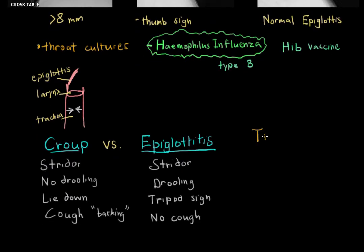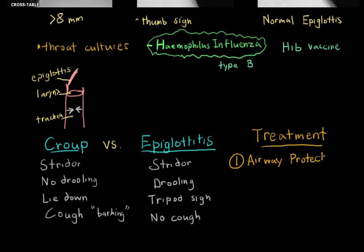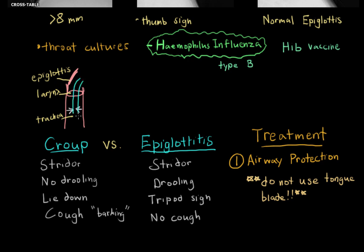Now let's finish off with the treatment of epiglottitis. First and foremost, you want to protect the airway — this is the number one treatment because it can close up so rapidly. In fact, one to two hours after getting a fever, patients can start to swell up and have trouble breathing. A little side note: if you at all suspect epiglottitis, do not use a tongue blade, as that can cause more swelling. You should only examine the airway when all tools to establish airway protection and deliver oxygen are at hand.